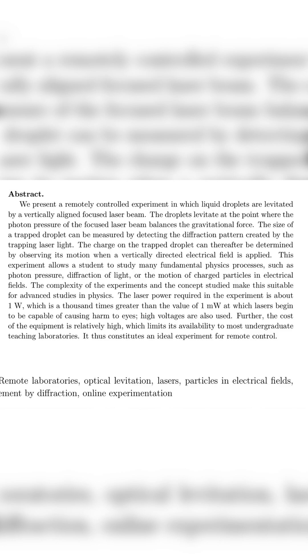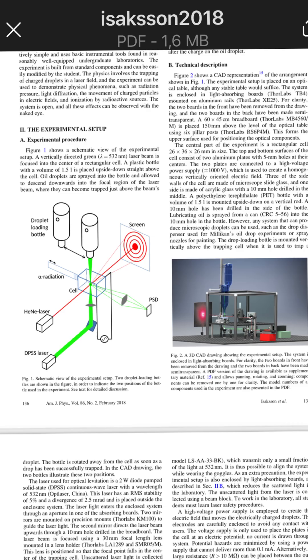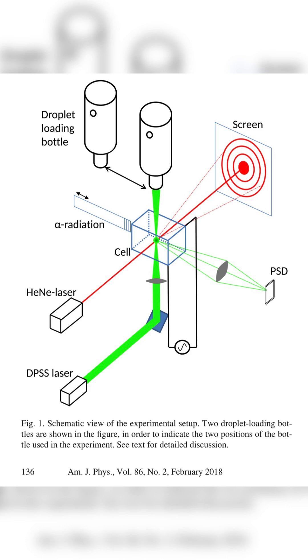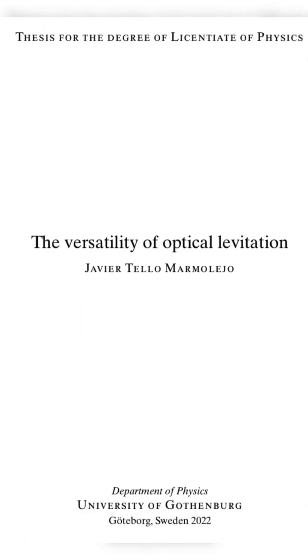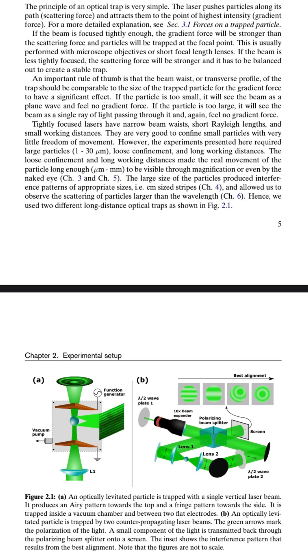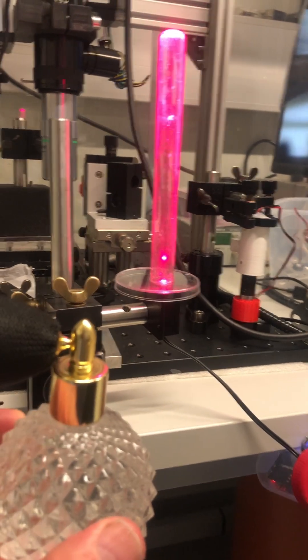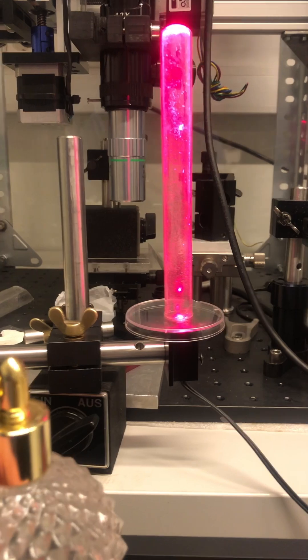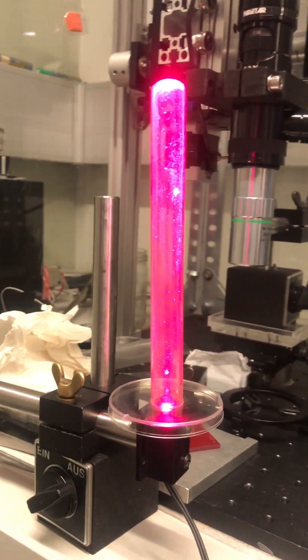2 cm focal distance and laser power 170 mW. Today I learned to trap a glycerol droplet with a DVD laser diode, 170 mW.